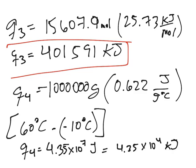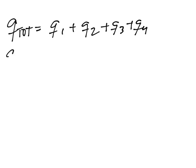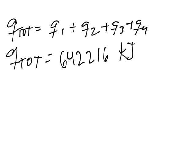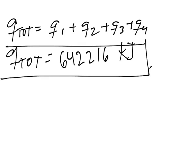Now we have all of our heats. Just adding them up would be the last step. Our total heat equals Q1 plus Q2 plus Q3 plus Q4, and that would be 642,216 kilojoules. And that's it for the enthalpy of a physical change.